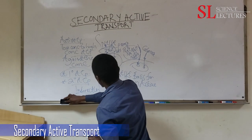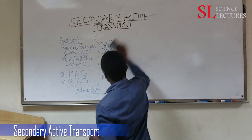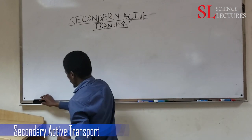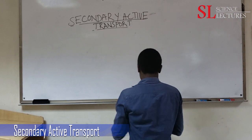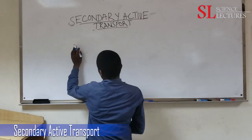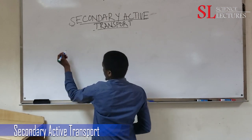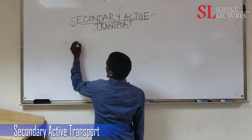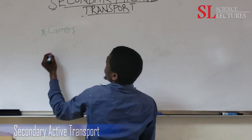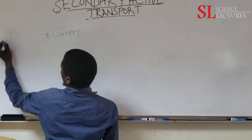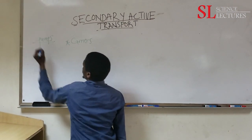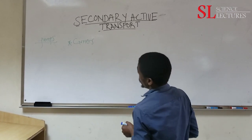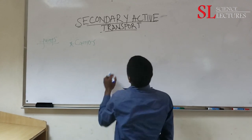Let's look at some examples of secondary active transport. An important thing to note is that secondary active transport uses carriers, whereas in primary active transport we utilized pumps.